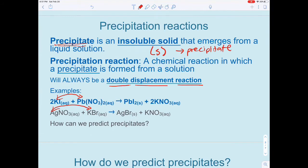Now that we can predict the products by switching the metals around, we want to figure out: how can we determine if it's a precipitate, a solid, or if it's aqueous?